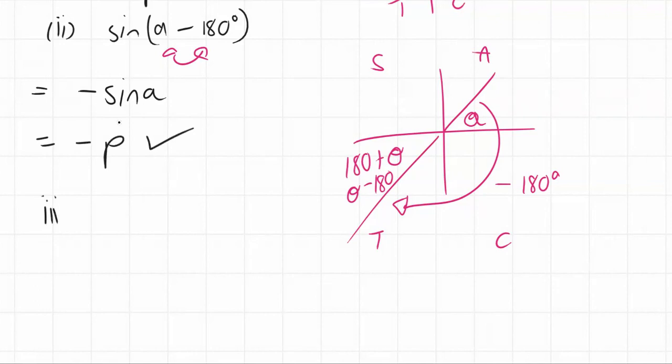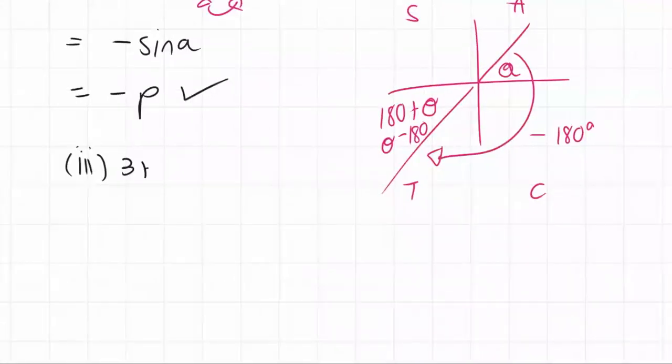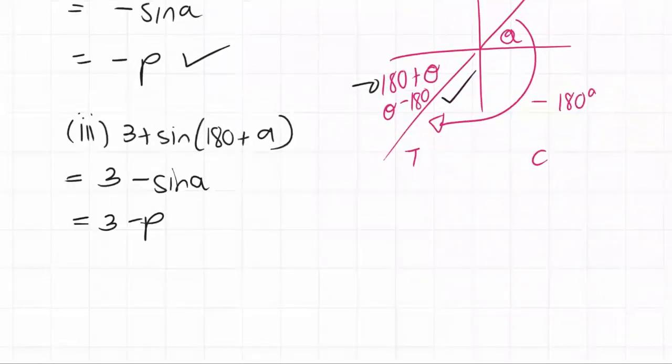Number iii. Let's go back and see what that was. It was 3 plus sine of 180 plus a. So 180 plus a you can see is still in this quadrant. So it's the same thing. So it's simply equal to 3 minus sine a, which is 3 minus p.